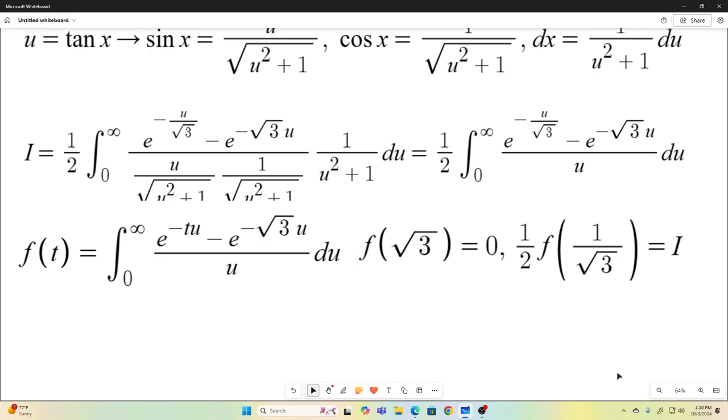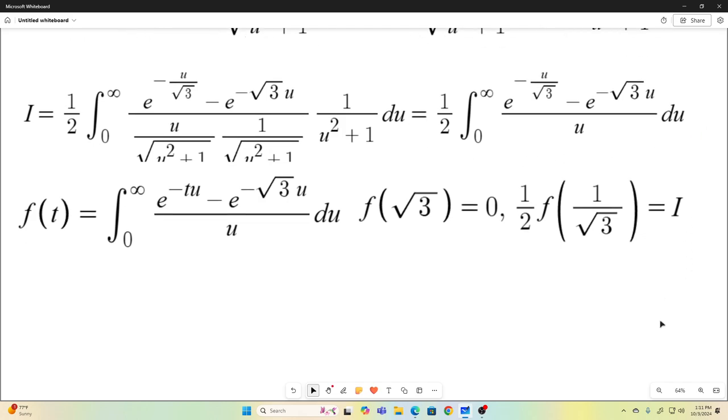And if we take one half of f of t evaluated at 1 over square root of 3, we get back exactly the value of our original integral that we set out to solve.